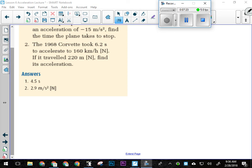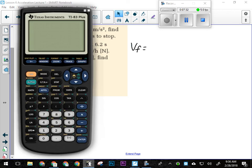So here's what we know. We know that VF was 160 kilometers per hour, but I need that in meters per second. So I've got to divide it by 3.6 first. So 160 divided by 3.6 gives me 44.4 repeating.